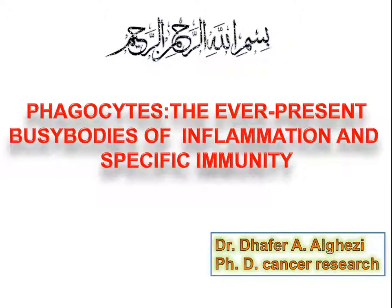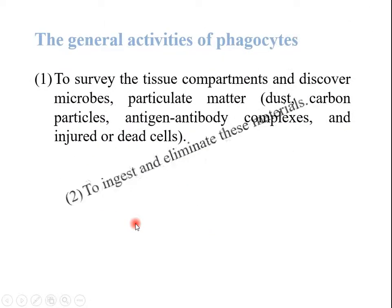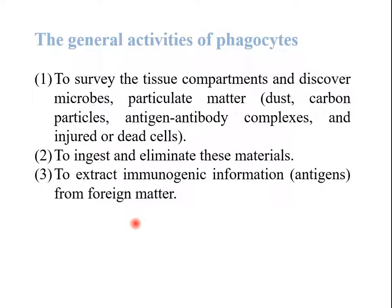Today I am going to talk about phagocytes. The general activities of phagocyte cells are to survey the tissue compartments and discover microbes, particles such as dust, carbon particles, antigen-antibody complexes, and injured or dead cells. Their functions include ingesting and eliminating these materials, and finally extracting immunogenic information and antigens from foreign matter.